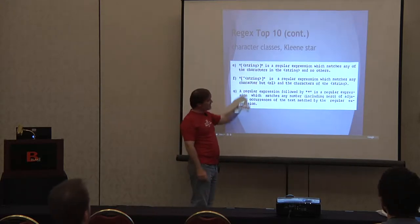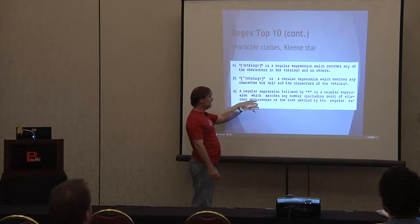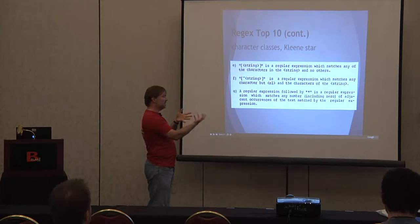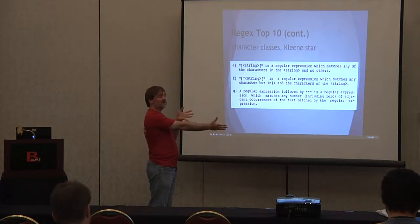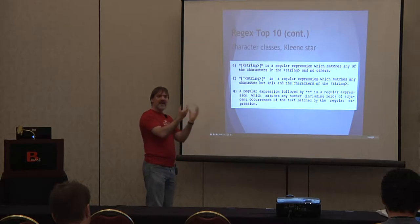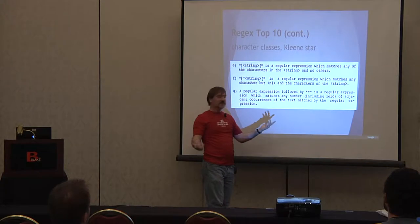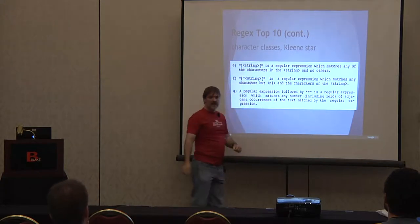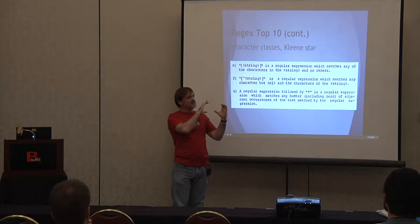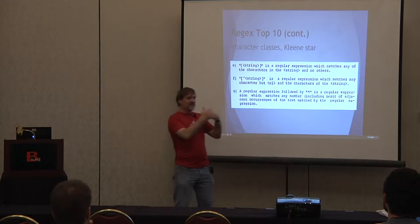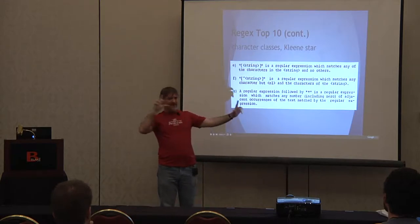This is the Kleene star — you typically just call it star. It's a repeat. When a star follows a letter, it says match that letter zero or more times — zero up to any number. So A-star will match no A's, one A, two A's, and so on. You can put this star after anything — after a character class. If you have a character class of ABC and put a star after it, you can match A, A, B, B, B, A, A, C, C, and so on.